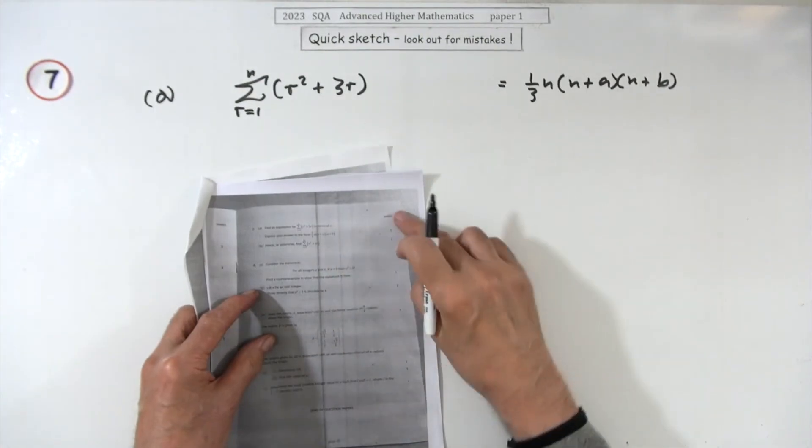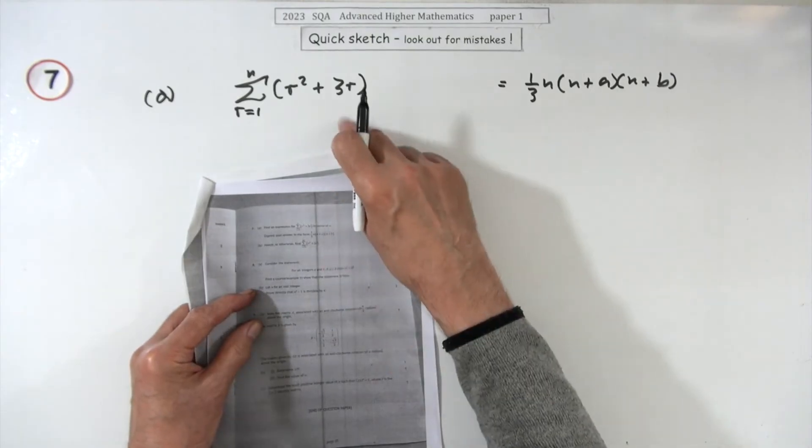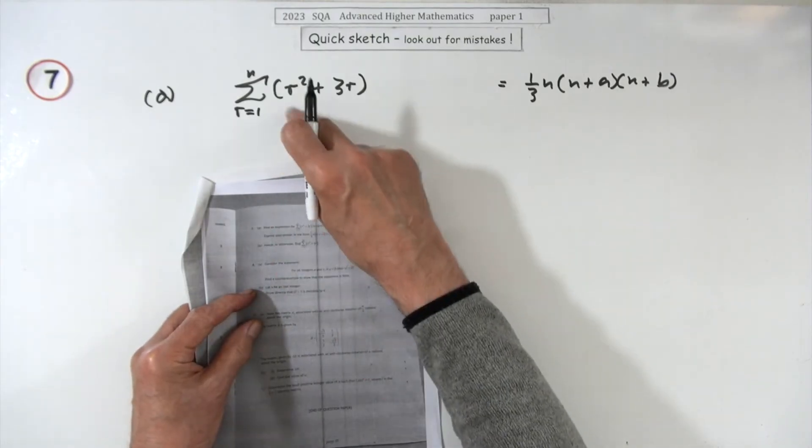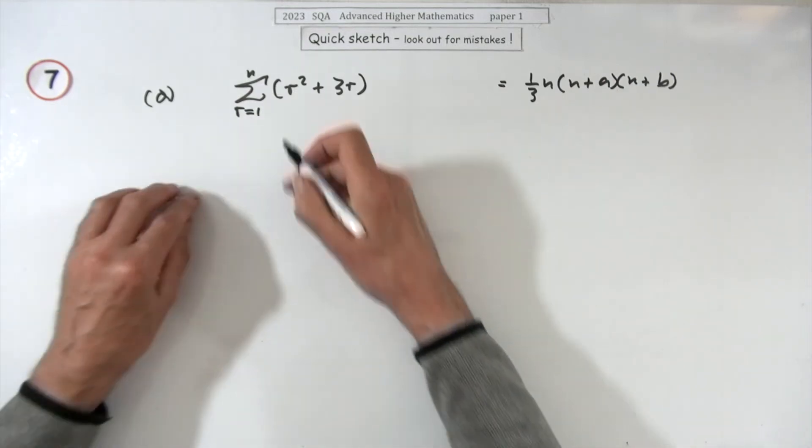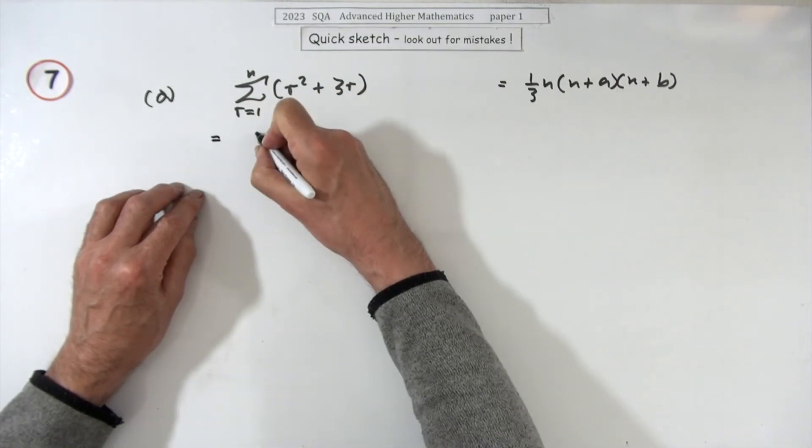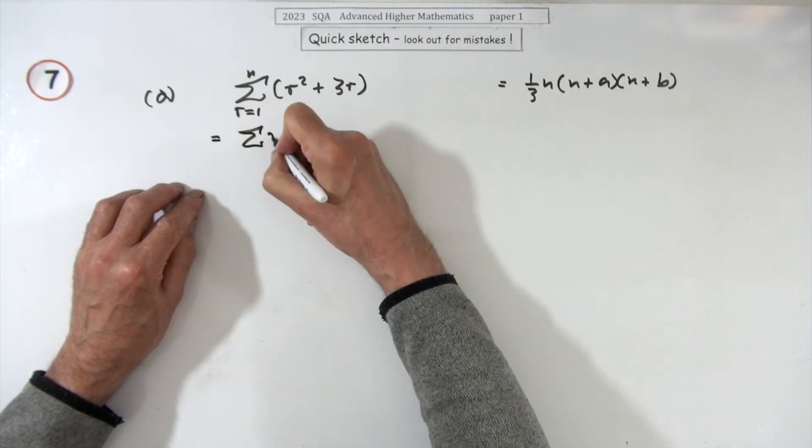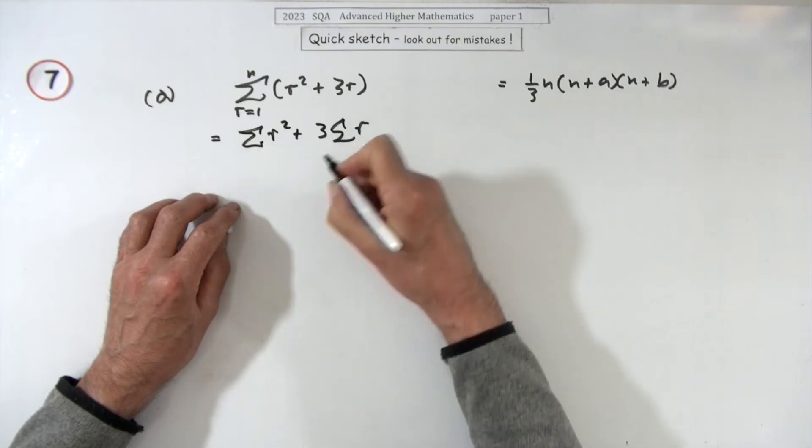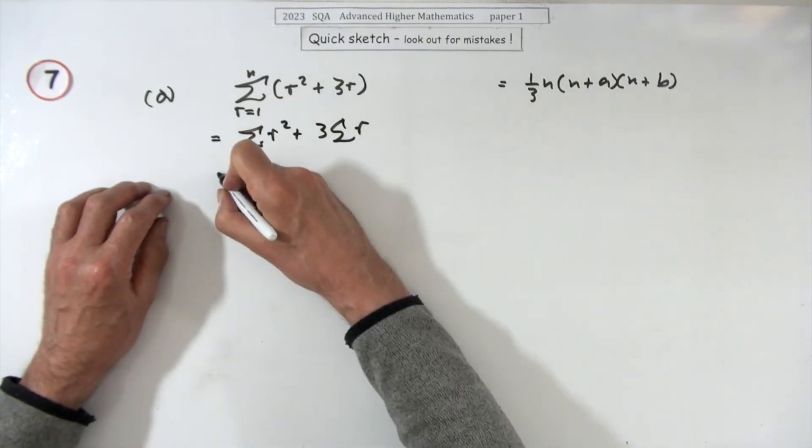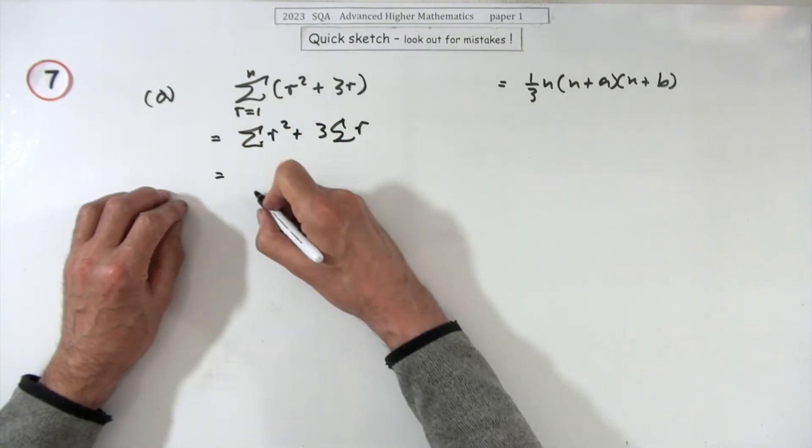And so number seven for four marks, summations. Find an expression for this in this form. Well you'll find them at the front, but I'll just split that up first of all. That would be the sum of r squared plus the sum of r. I'm not going to put those bits in now. The r squared one, that's the one with one sixth of n, n plus one, two n plus one.